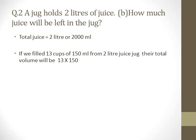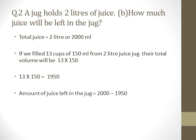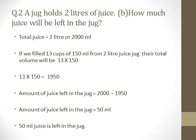To find the juice used, multiply 13 by 150: that gives 1950 ml. So 1950 ml was used to fill 13 cups. To find the juice remaining, subtract 1950 from 2000: 2000 minus 1950 equals 50. So the amount of juice left in the jug is 50 ml.